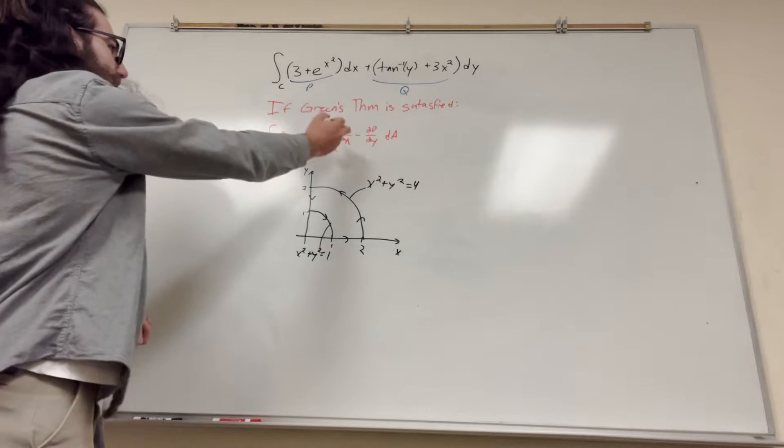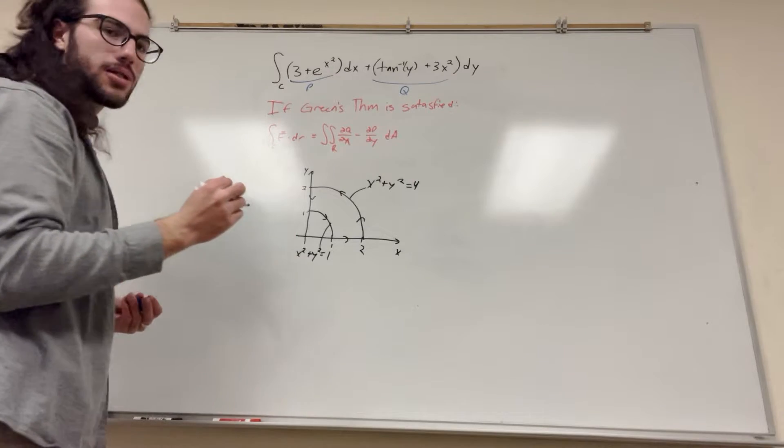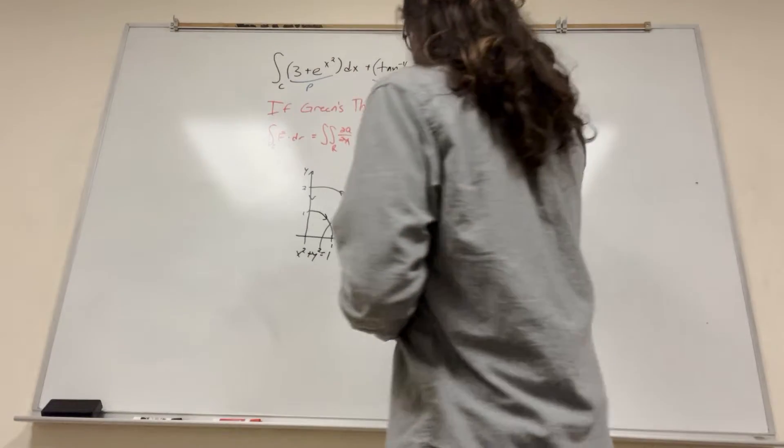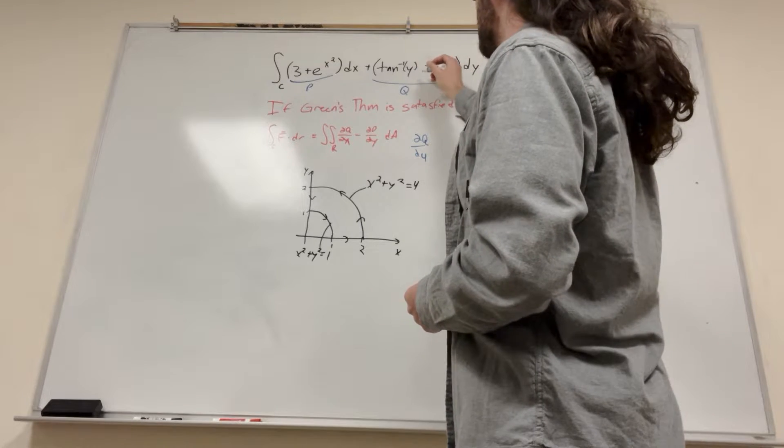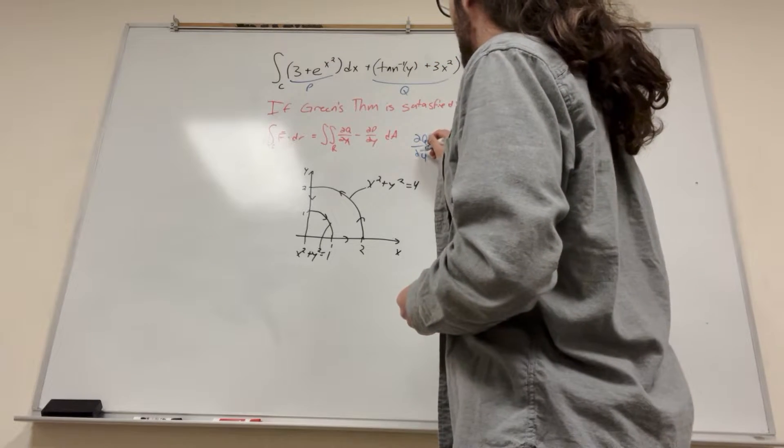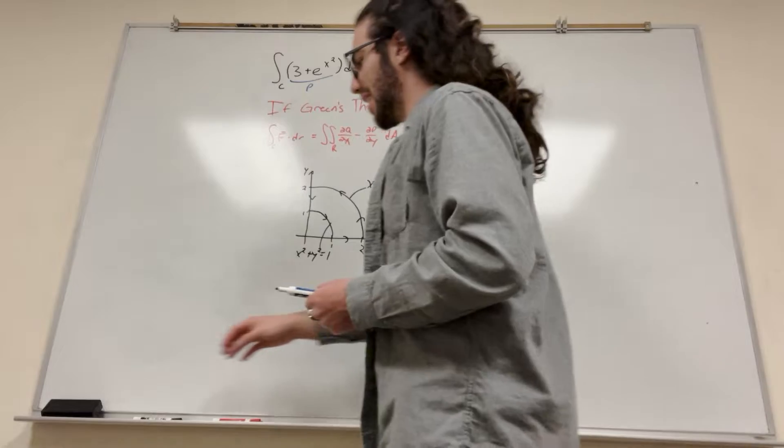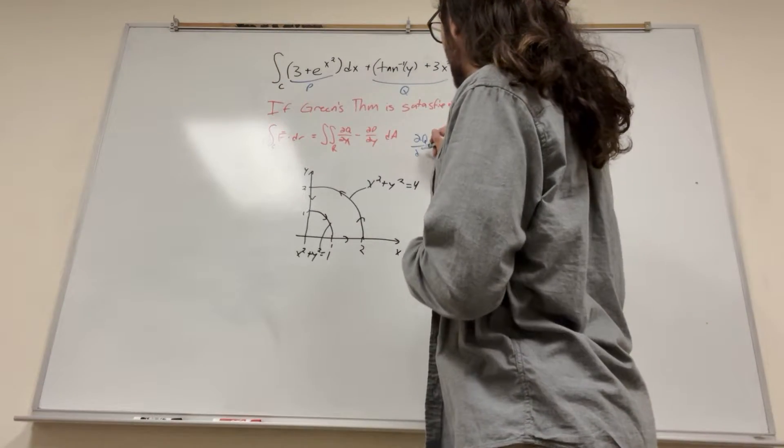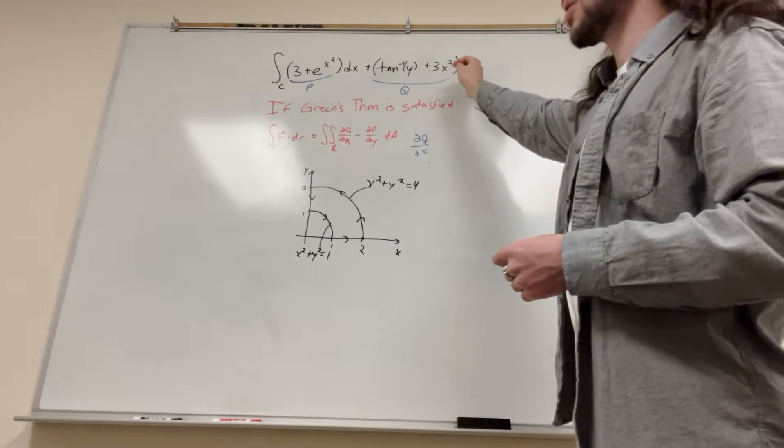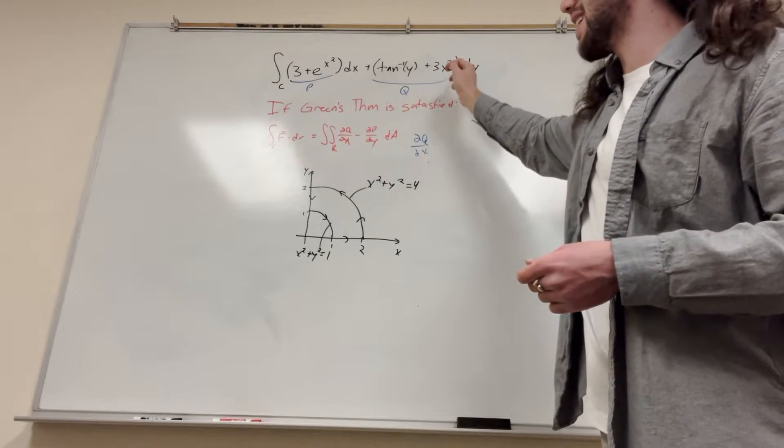So we first need to find the derivative of Q with respect to x and the derivative of P with respect to y. So let's do it. The derivative of Q with respect to x, so this with respect to x. You need to remember it because it's the opposite. This is corresponding to y, and you take the derivative with respect to x. So of course, luckily, we're going to get rid of that inverse tangent of y.